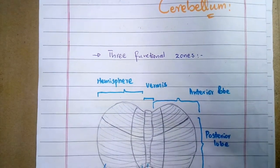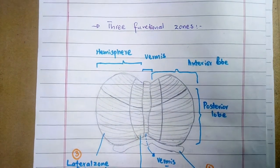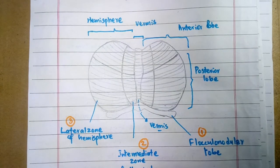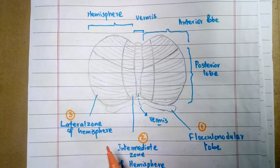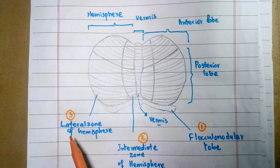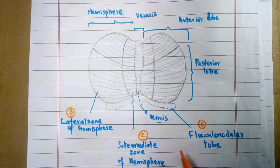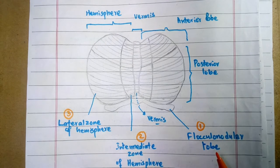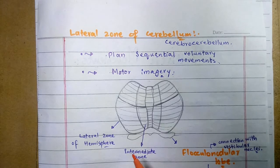There are three functional zones of the cerebellum. Each cerebellar hemisphere has three functional zones — as you can see in this diagram: the flocculonodular lobe, the intermediate zone of the hemisphere, and the lateral zone of the hemisphere. Now I'll explain the functions of each of these zones one by one.